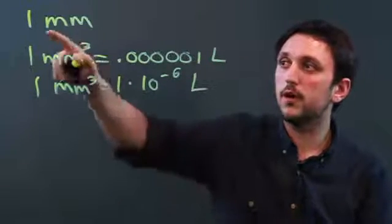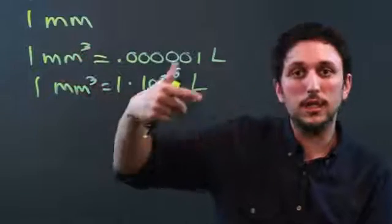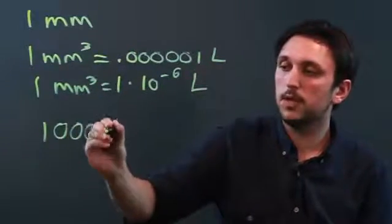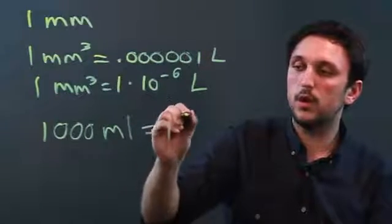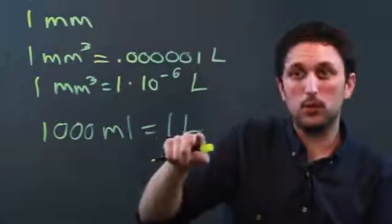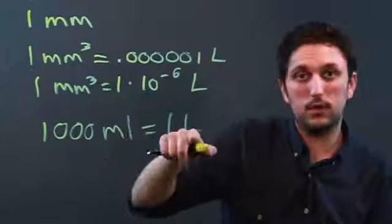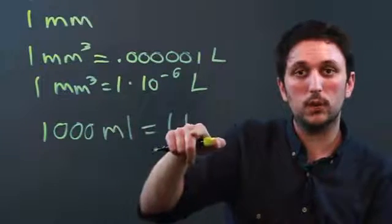If, however, you're trying to convert a milliliter into a liter, 1,000 milliliters equals one liter. These are both units of volume, and a milli is one thousandth of a liter, so 1,000 of them would equal one liter.